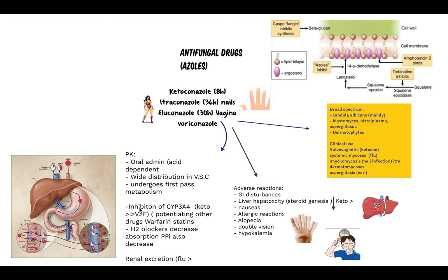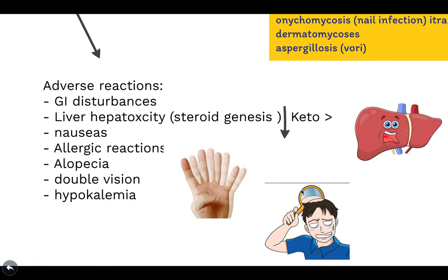Azoles undergo first-pass metabolism and inhibit CYP3A4, potentiating drug effects such as warfarin and statins. They also have drug interactions with H2 blockers and proton pump inhibitors, which decrease the absorption of azoles. They are excreted renally. Adverse reactions include GI disturbances. Most important to remember: liver hepatotoxicity and decreased steroidogenesis — ketoconazole being the most potent in liver dysfunction and decreased steroidogenesis. Hypokalemia is caused by itraconazole, and double vision by voriconazole. Alopecia is another one to keep in mind.